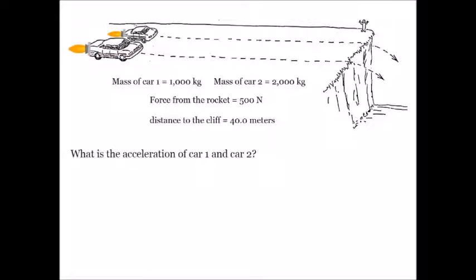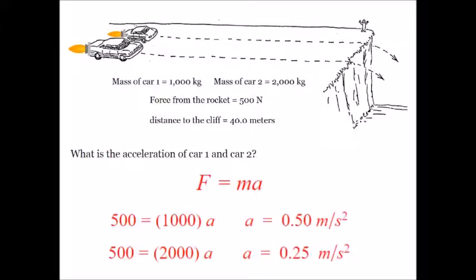Question one: What is the acceleration? Using F equals mA, the smaller car has a bigger acceleration of 0.5 meters per second squared.